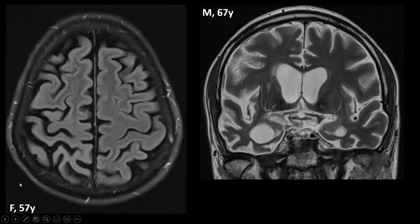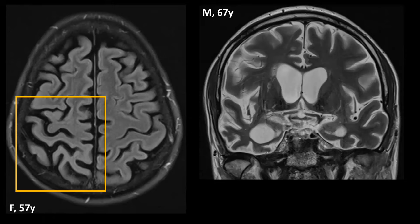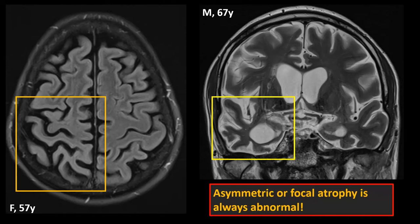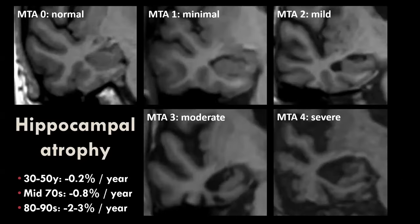Two more patients illustrating focal and asymmetrical atrophy. A 57-year-old patient with asymmetrical atrophy involving the right parietal lobe — caused by corticobasal degeneration, a Parkinson-plus syndrome. Another patient showing marked asymmetrical dilatation of the temporal horn and atrophy of the temporal neocortex on one side — this was frontotemporal lobar degeneration. Key message: asymmetrical or focal atrophy should always be considered abnormal, and you should think about possible causes.